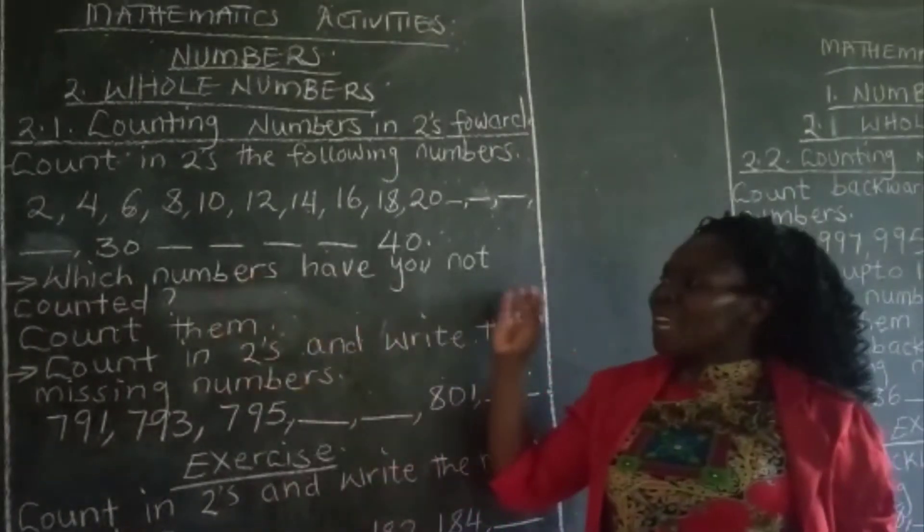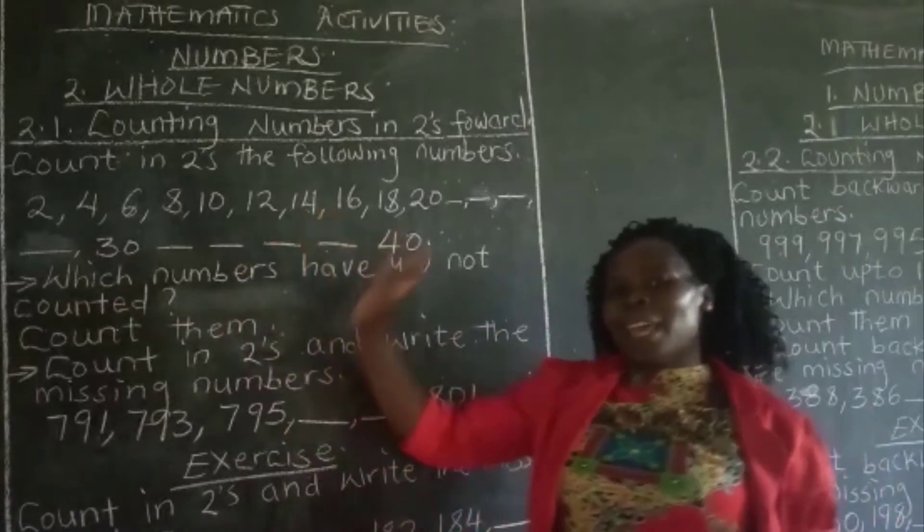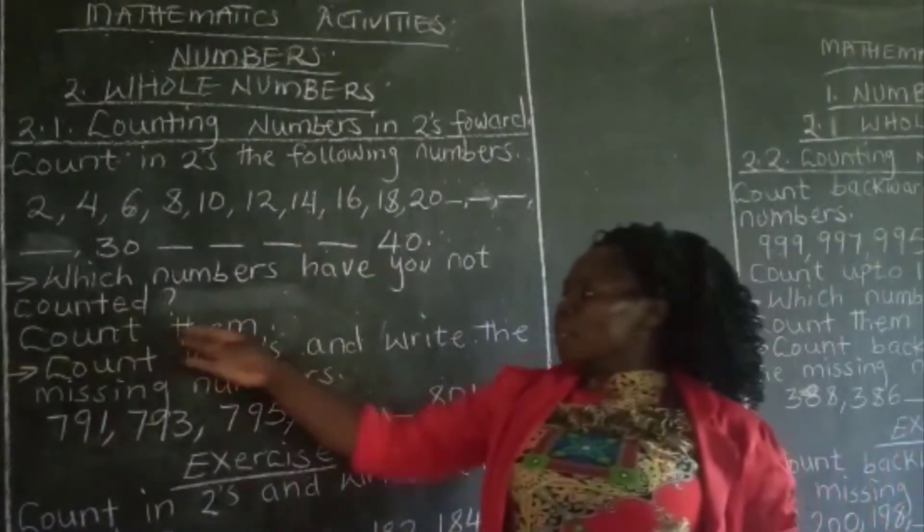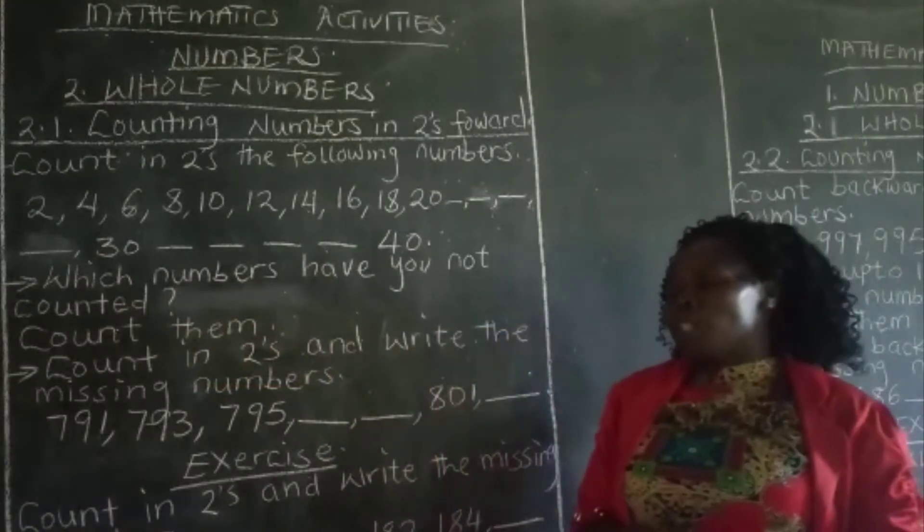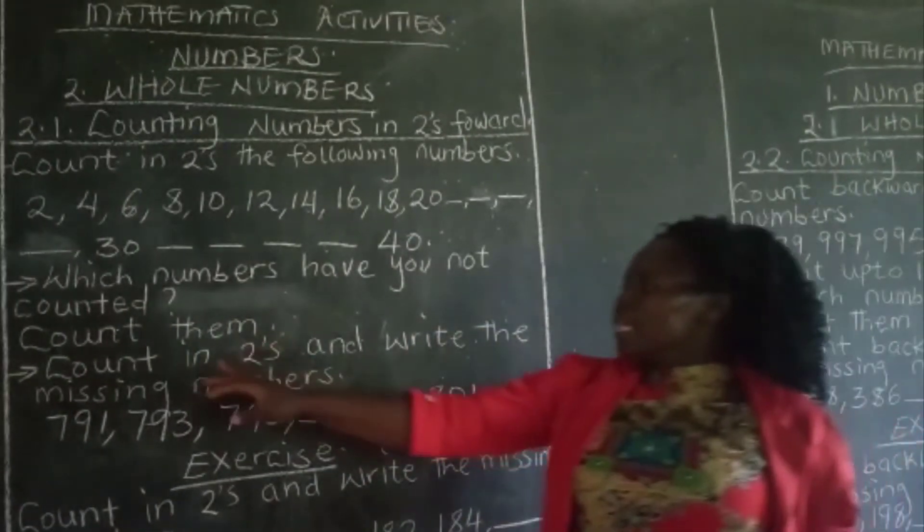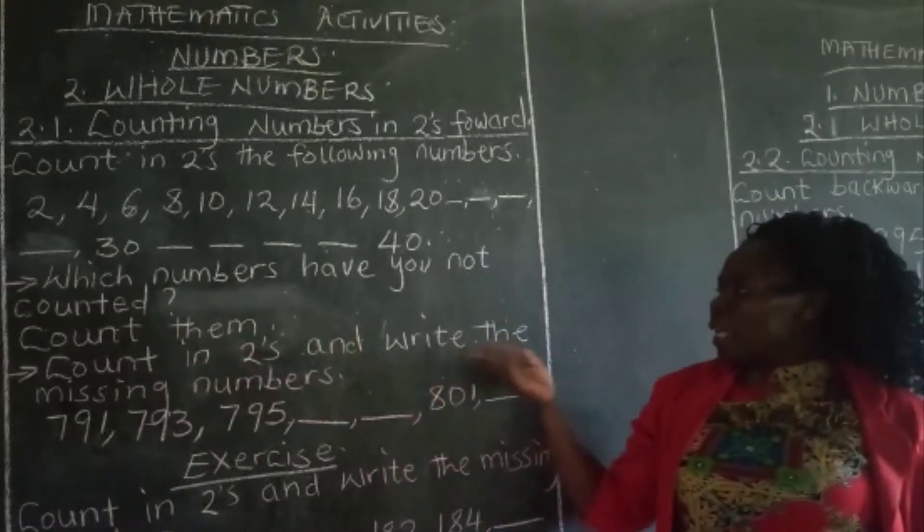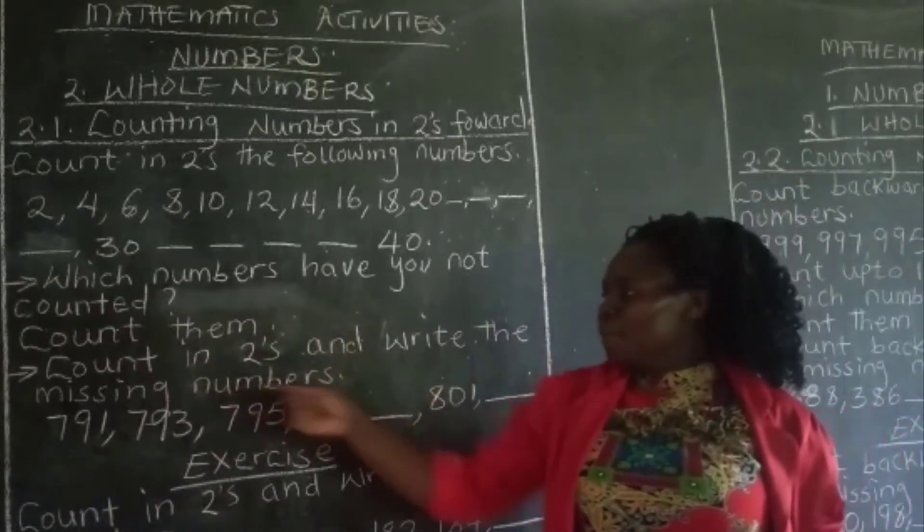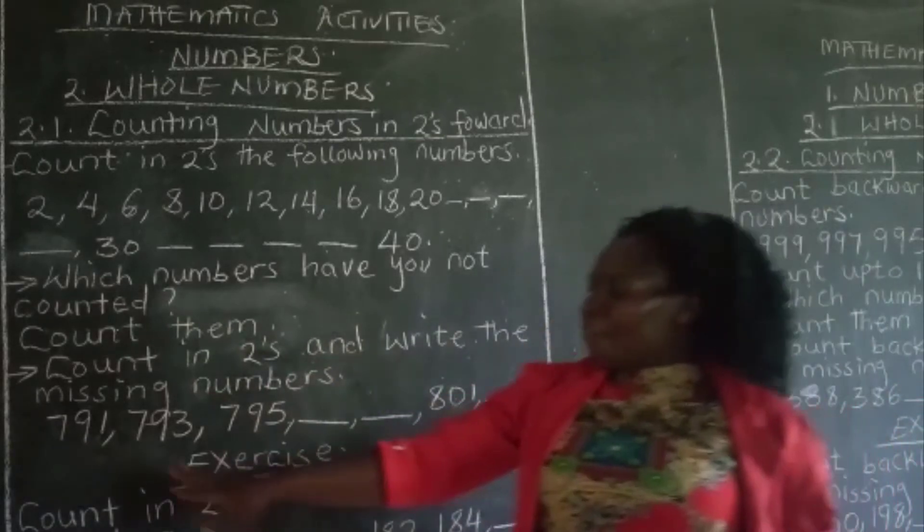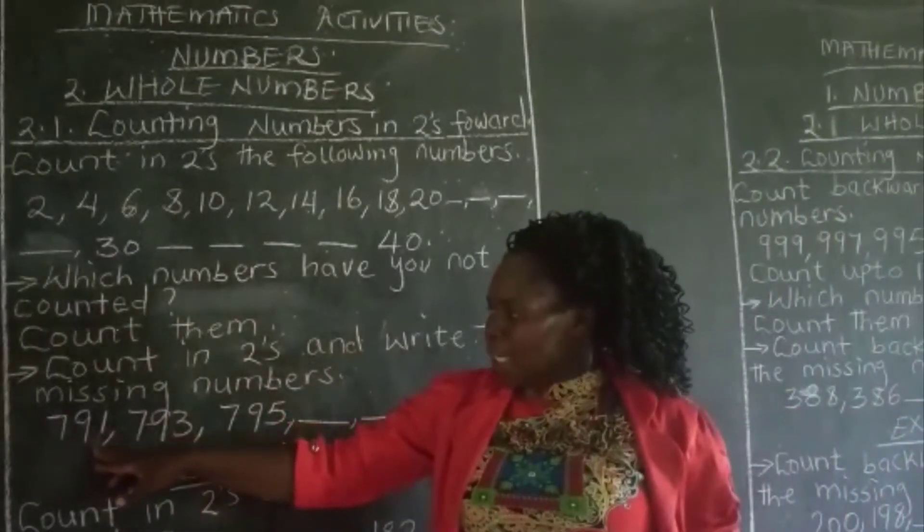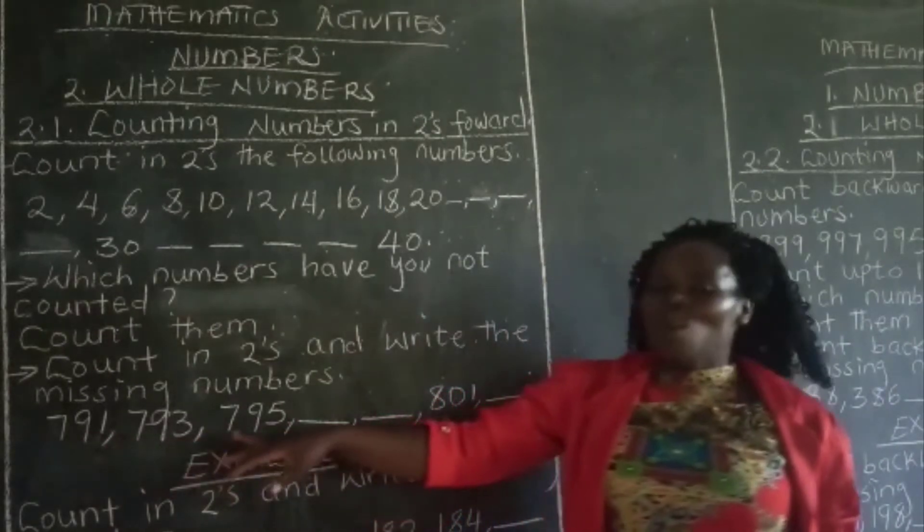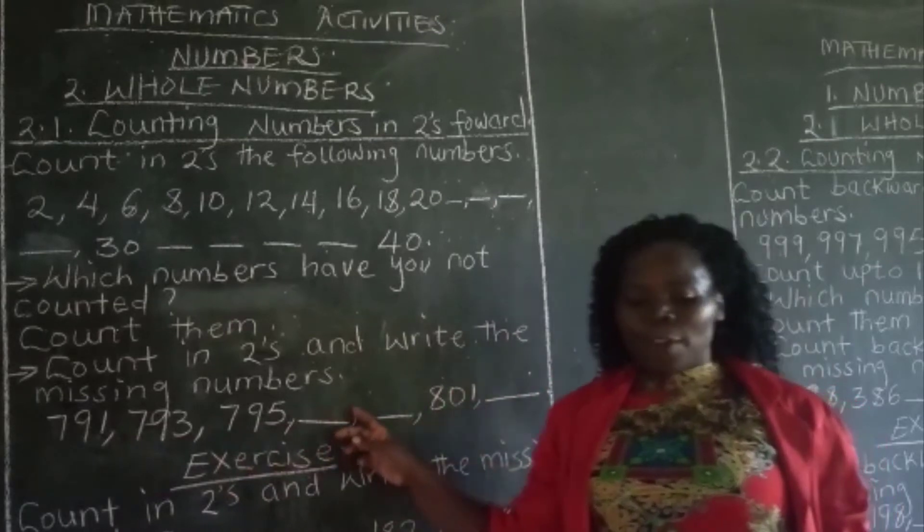Learners, which numbers have you not counted in these numbers? Now count the numbers that you have not counted. Okay, let's count in twos and write the missing numbers in the given number. Now, we have 791, we have 793, we have 795.